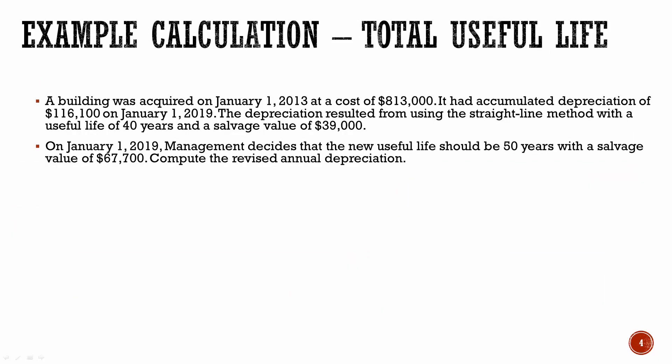Now let's look at another example where it's worded just a little bit differently. A building was acquired on January 1, 2013 at a cost of $813,000. It had accumulated depreciation of $116,100 on January 1, 2019. The depreciation resulted from the straight-line method with a useful life of 40 years and a salvage value of $39,000. On January 1, 2019, management decides that the new useful life should be 50 years with a salvage value of $67,700.